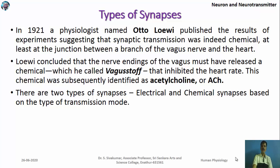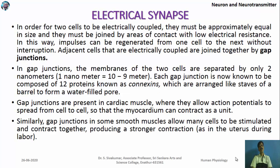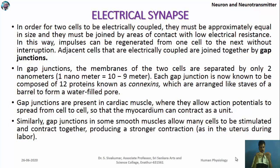There are two types of synaptic communication: electrical synapse and chemical synapse. In electrical synapses, communication occurs through the exchange of ions via gap junctions made of connexin proteins. These junctions connect two cells through a pore of about 2 nanometers in size, through which ions can be exchanged, changing the electrical charge and transmitting the nerve impulse.